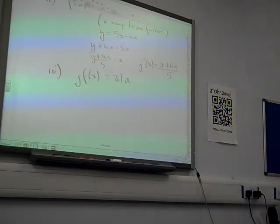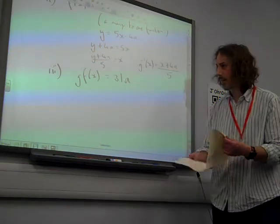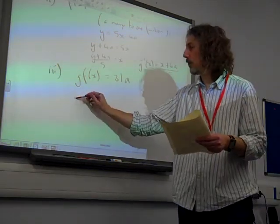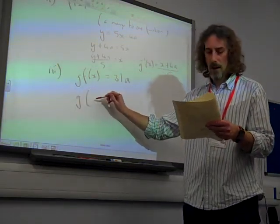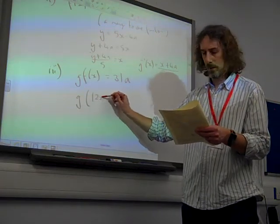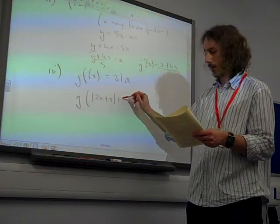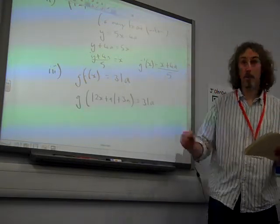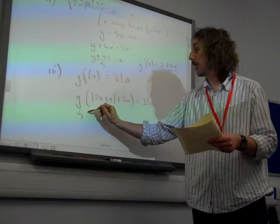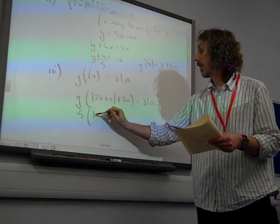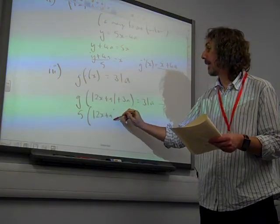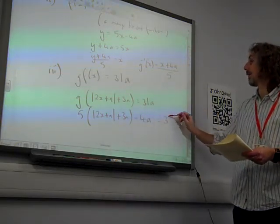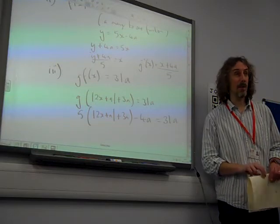So where's my question? The question said g of f of x. So g of that means we're inputting that. That is 5 times the modulus of 2x plus a plus 3a minus 4a is 31a. So we had to do that bit first.